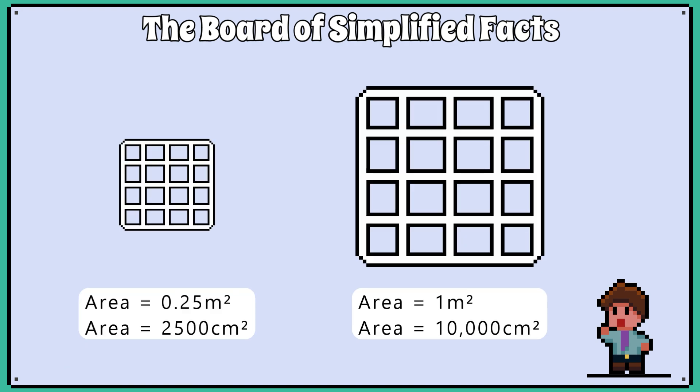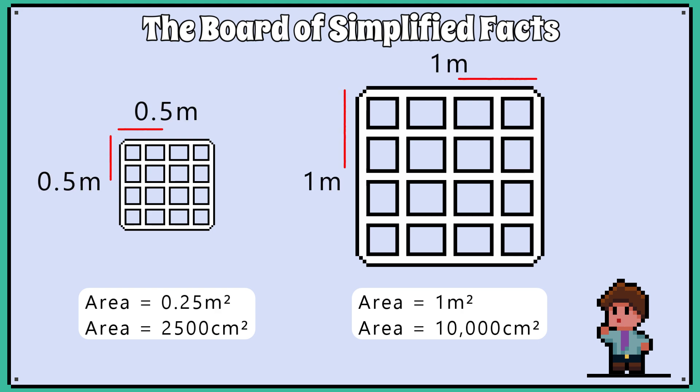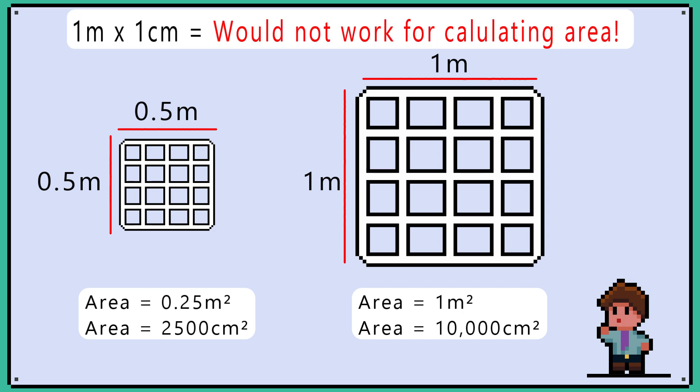Quadrats are typically square shaped and normally have an area of either 0.25 square metres or 1 square metre. It's worth understanding how to calculate the area of a quadrat, and to always make sure both lengths are converted into metres to avoid making errors. Examiners like to be cruel and throw numeracy skills into the mix, so check your units.